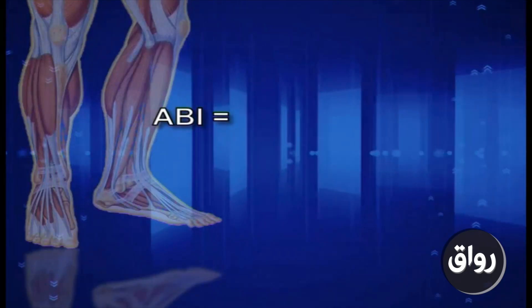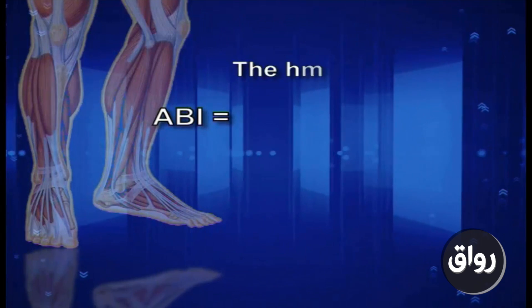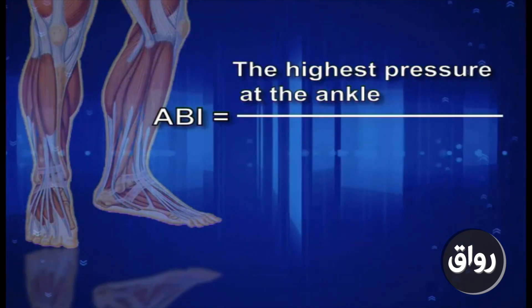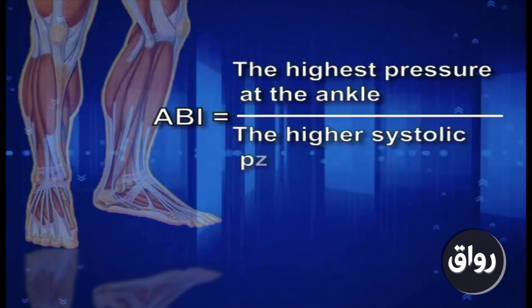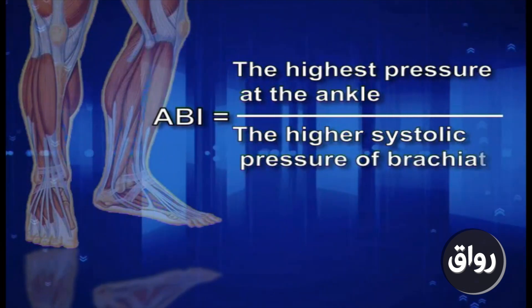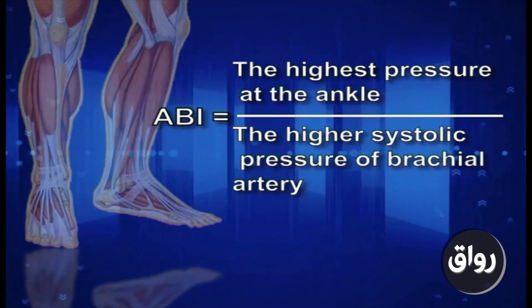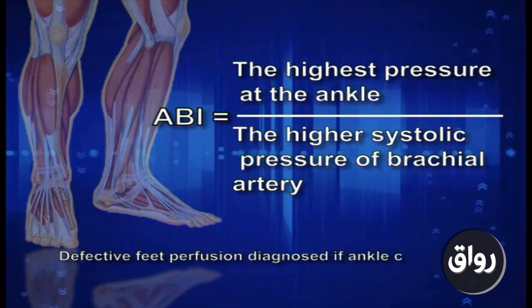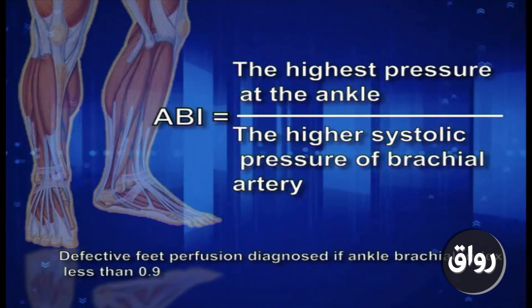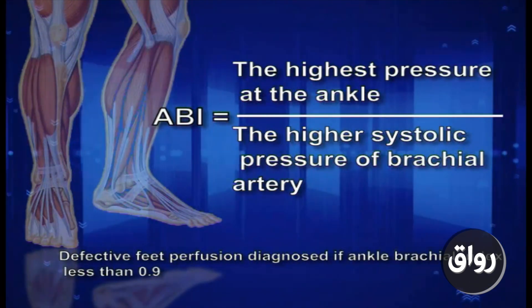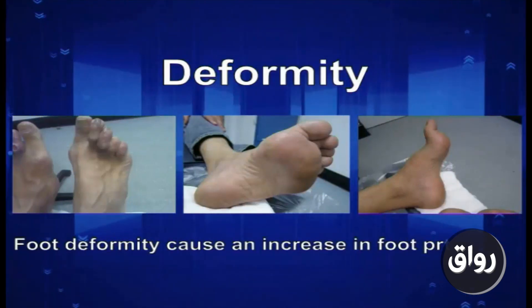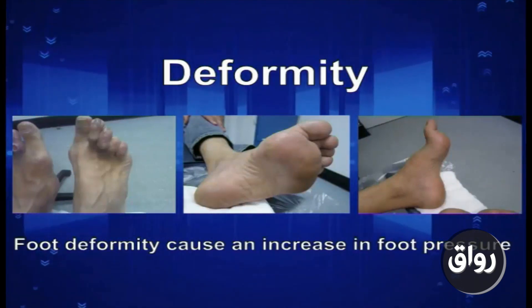Note the pressure reading when the Doppler signal returns. The ankle-brachial index equals the highest pressure at the ankle divided by the higher systolic pressure of the brachial artery. Defective foot perfusion is diagnosed if the ankle-brachial index is less than 0.9.